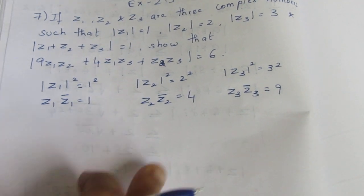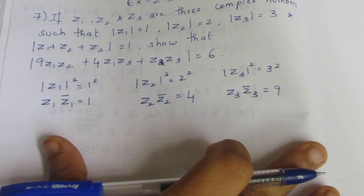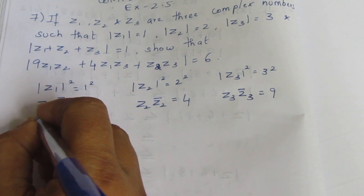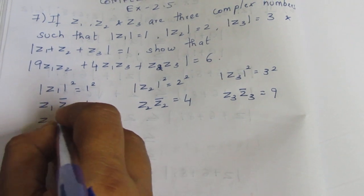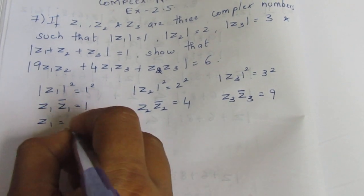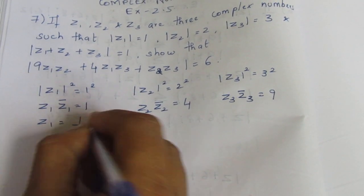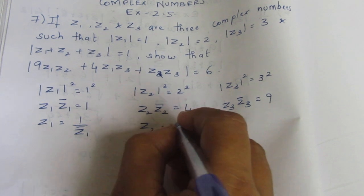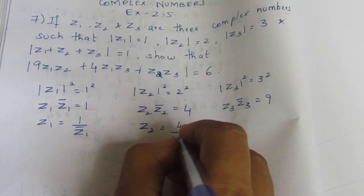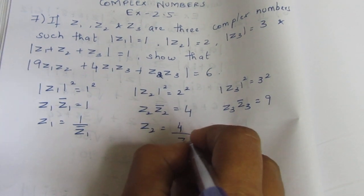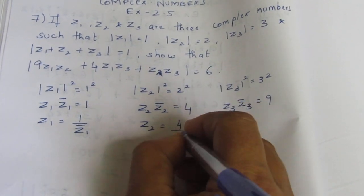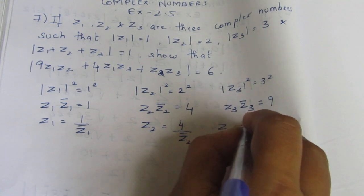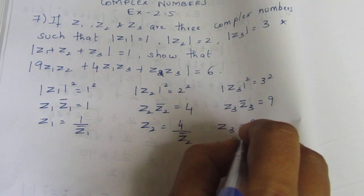So from these we get: Z1 equal to 1 by conjugate Z1, Z2 equal to 4 by conjugate Z2, Z3 equal to 9 by conjugate Z3.